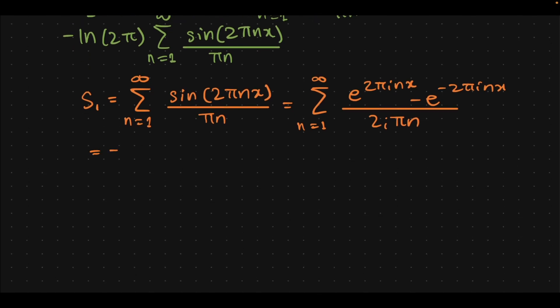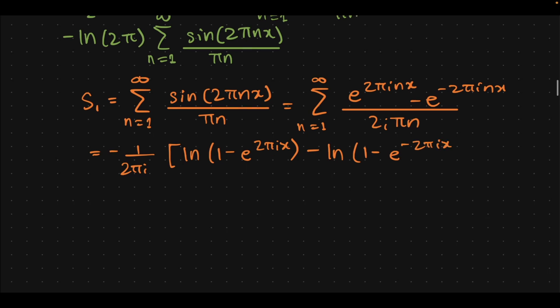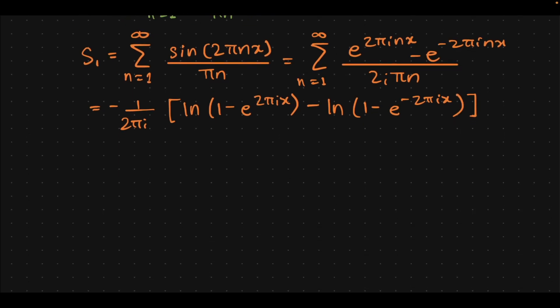Which becomes minus 1 over 2πi, natural log—I'm just using the Taylor series expansion for natural log—minus natural log of 1 minus e^(-2πinx). And we have minus minus 1 over 2πi, just using the identity for the natural log, 1 minus e^(2πix).